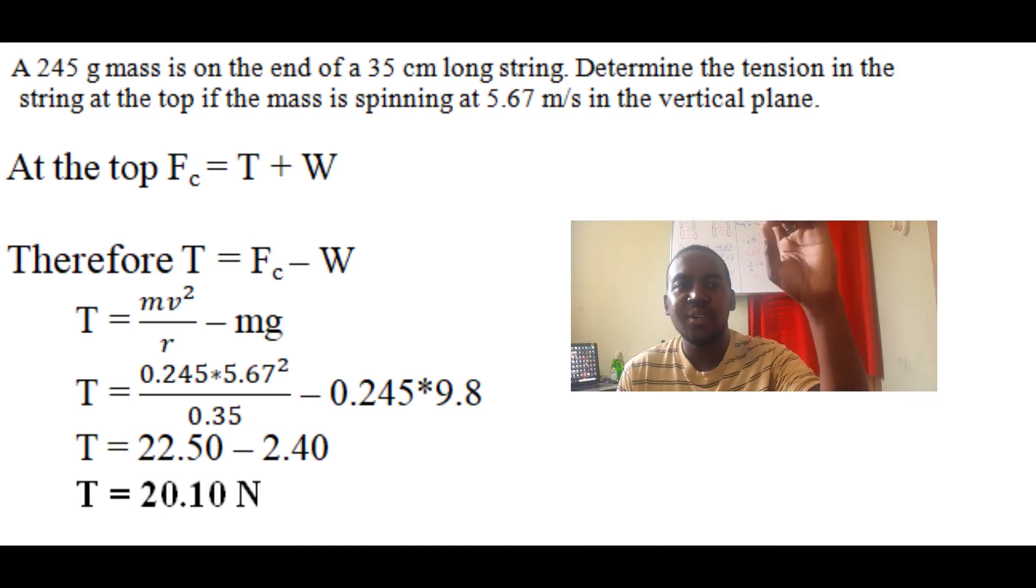In the vertical plane, at the top, tension always goes down inside the circle and weight always acts down. Centripetal force goes up to maintain balance. We have two forces going down, so centripetal force goes up. From that, we know Fc = T + W. We're asked to find tension, so T = Fc - W.